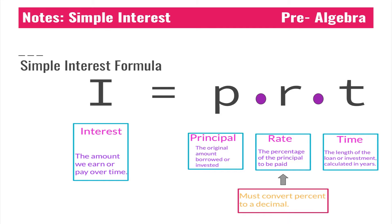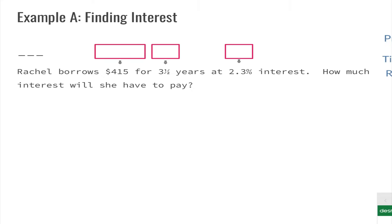Let's go ahead and take a look at Example A. It says find the interest. Rachel borrows four hundred and fifteen dollars for three and a half years at a two point three percent interest. How much interest will she have to pay? The first thing we need to do is use our formula: I equals P times R times T.